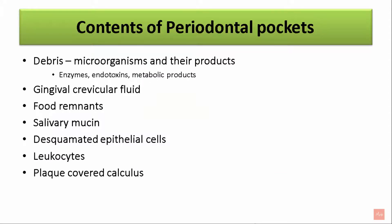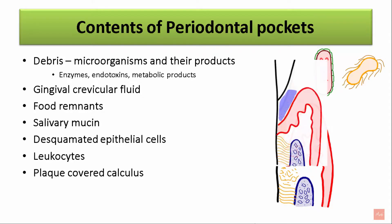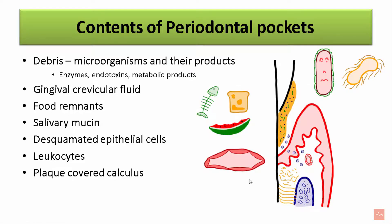Since the periodontal pocket develops from the extension of the microbial products into the gingival sulcus, and there is an innate and acquired immune response of the body towards these microorganisms, it is important to understand the contents of periodontal pockets for prevention and treatment. A periodontal pocket involves debris which includes microorganisms and their products—mainly enzymes, endotoxins from the bacterial cell wall, and metabolic products. It also involves gingival crevicular fluid released from the gingival connective tissue, food remnants, salivary mucins, desquamated epithelial cells, leukocytes, and plaque which covers the subgingival calculus.